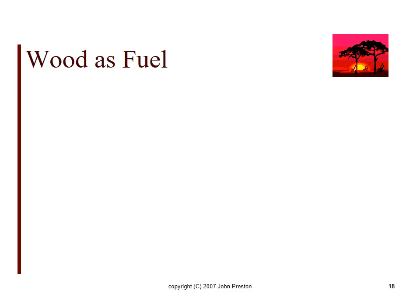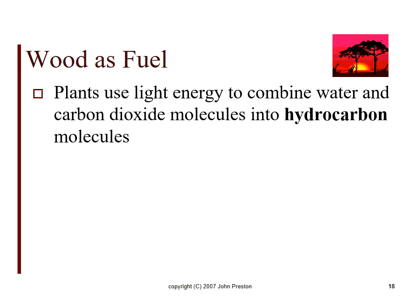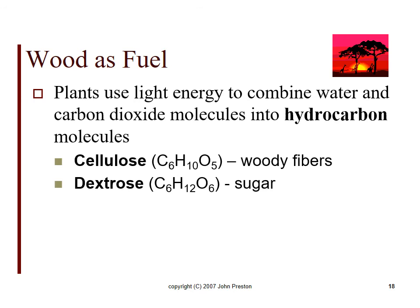Now we're getting into wood as fuel. Plants take this light energy combined with water and carbon dioxide and form hydrocarbon molecules. Here's an example of one that we call cellulose. This is the woody fibers of a plant. Another kind of hydrocarbon they can make is called dextrose. This is also what we call sugar. Notice how similar they are. Both have six carbons, one has 10, the other has 12 hydrogen, one has five oxygen, six oxygen. Pretty similar. But what a difference it makes in the plant. The woody fibers, one thing, sugar we can eat, we can digest it. Woody fibers we can't. So just that little bit of difference in the chemistry makes a huge difference to us in what we do with the hydrocarbons.